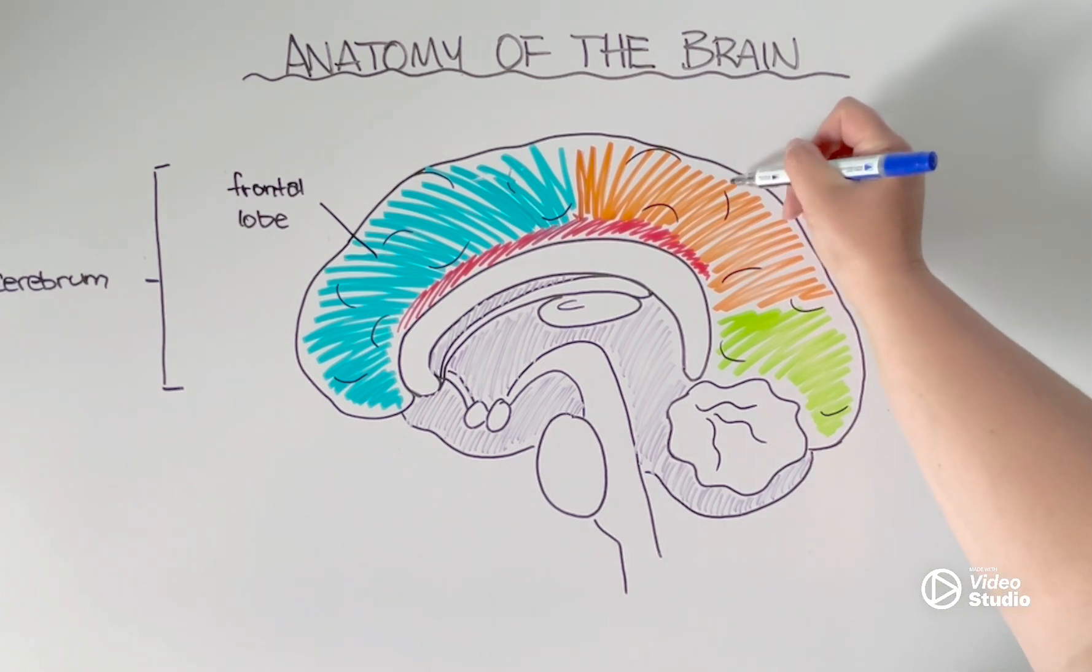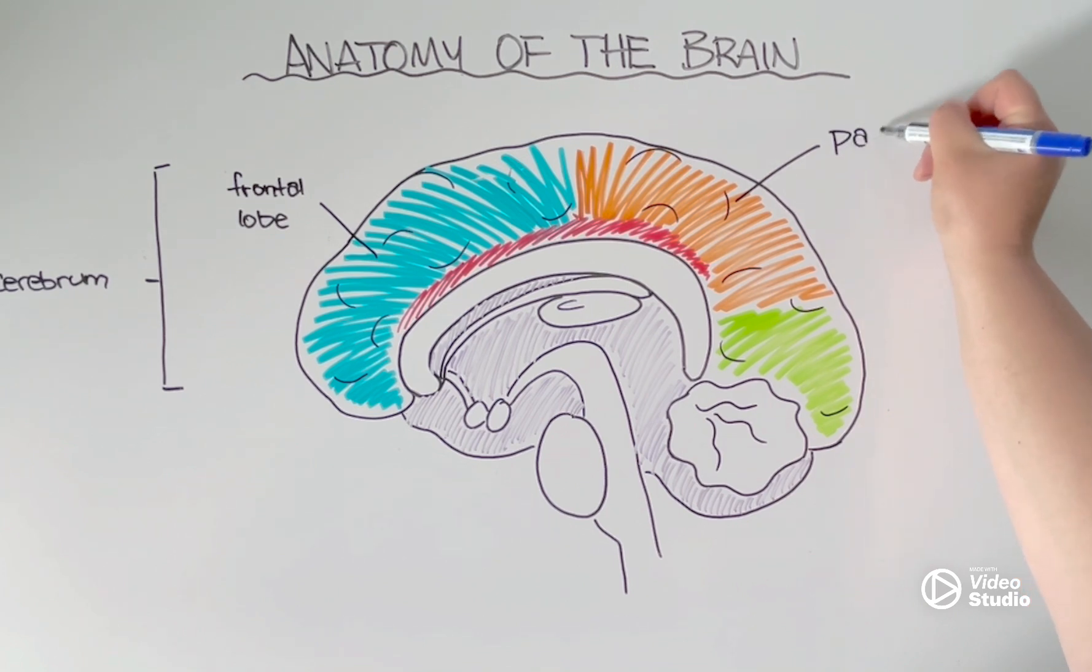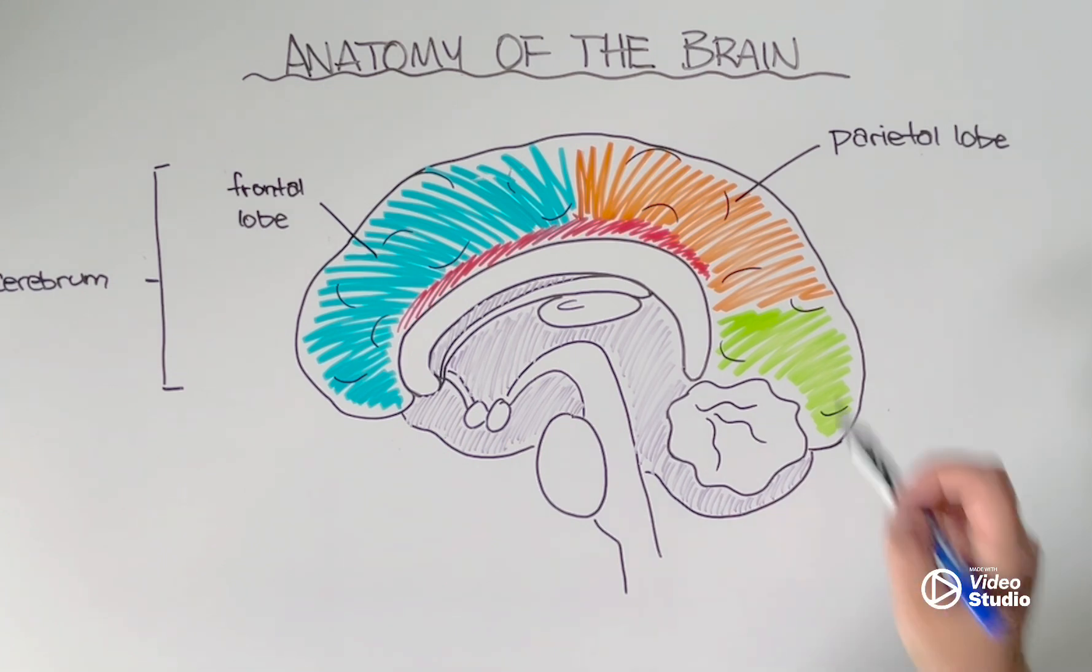Next, towards the top of the brain, we have a region known as the parietal lobe. And the parietal lobe is responsible for integrating information from all of the different senses and helping to make sense of it. We take in a lot of information from our surroundings at every moment of the day, and our parietal lobe, also known as the somatosensory cortex, basically helps to sort what all that information means so that we can make sense of it.